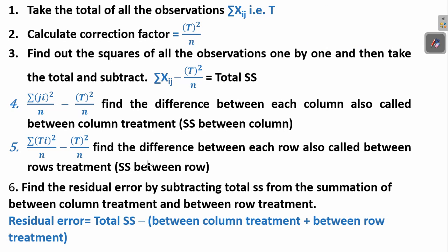Next in line is something called residual error. We need to calculate the residual error using the formula: total SS minus the sum of between column treatment plus between row treatment.